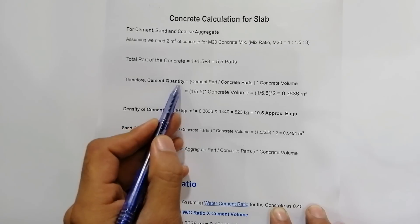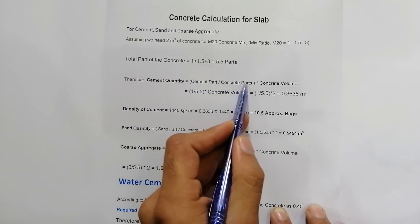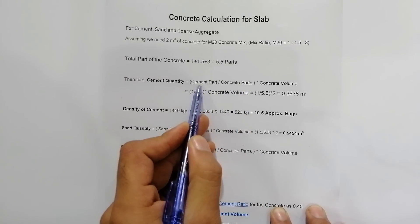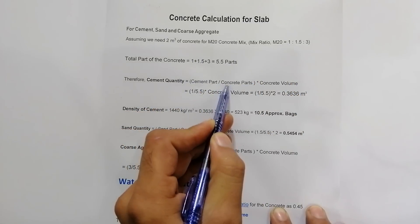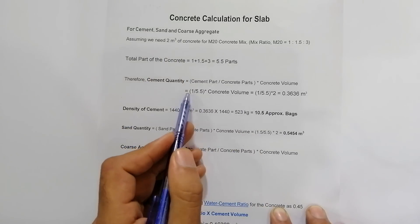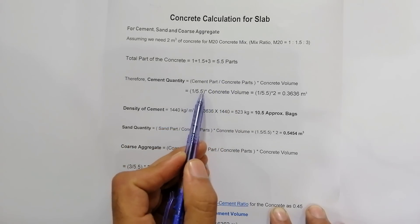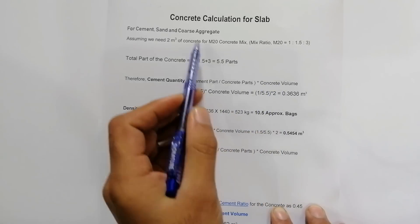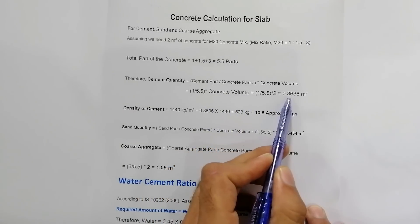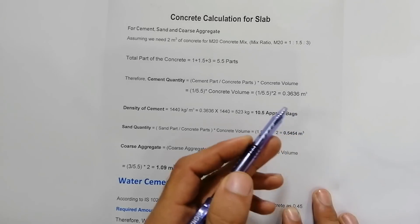To find cement quantity in bags: Cement quantity = (Cement part / Total concrete parts) × Concrete volume. Cement part = 1, total concrete parts = 5.5, concrete volume = 2 m³. So: 1 / 5.5 × 2 = 0.3636 m³. This is the volume of cement required for 2 m³ of M20 concrete.